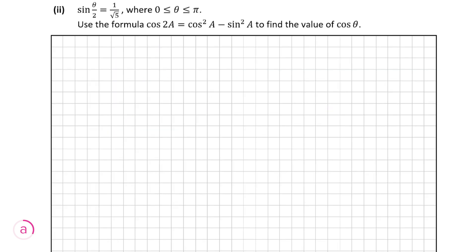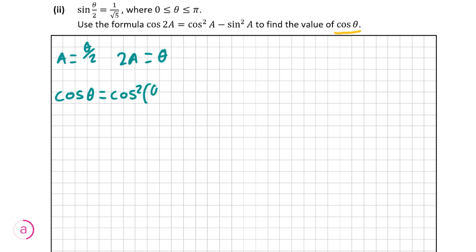Moving on to part 2, we're told that sine of theta over 2 is equal to 1 over root 5, and we're asked to use the formula we just proved to find the value of cosine of theta. We're going to let a equal theta over 2, so 2a equals theta. Substituting these values in, we get cosine theta equals cosine squared of theta over 2 minus sine squared of theta over 2.